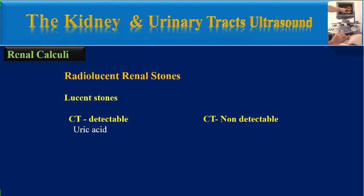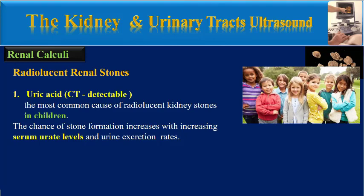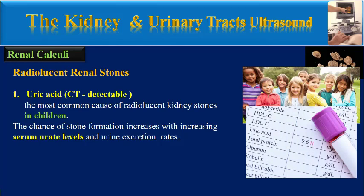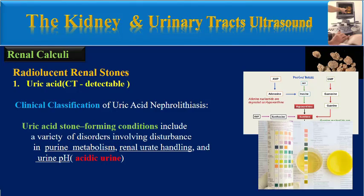We can classify radiolucent stones into two groups: CT detectable and CT non-detectable. CT detectable stones include uric acid and cysteine stones, and CT non-detectable stones include pure matrix stones. The first group of radiolucent CT detectable renal stones are uric acid stones, which are the most common cause of radiolucent kidney stones in children. The chance of stone formation increases with increasing serum urate levels and urine excretion rates.